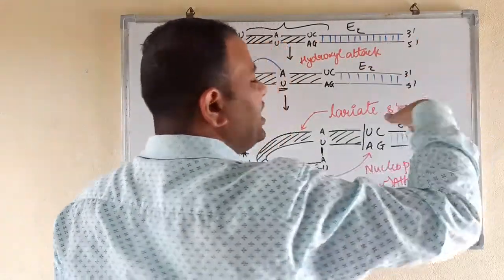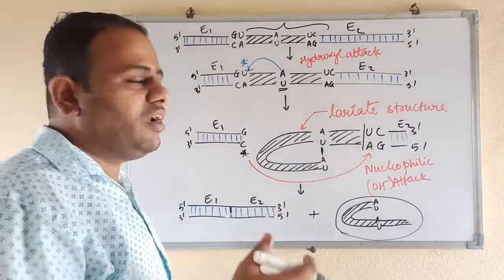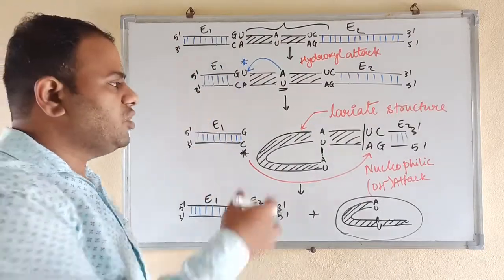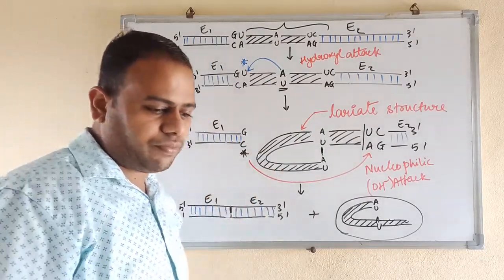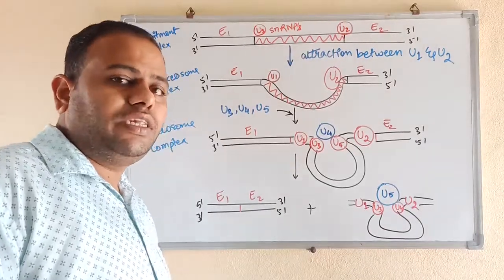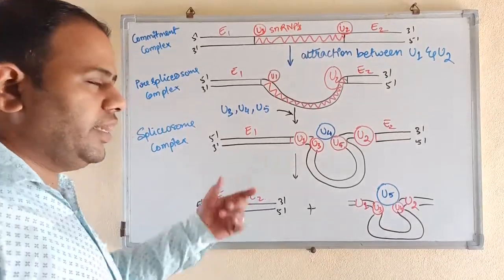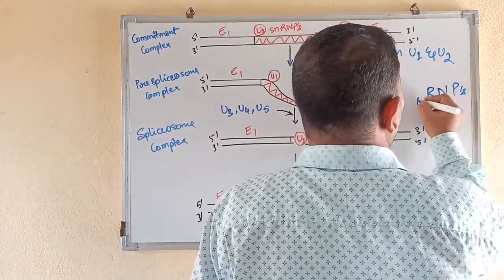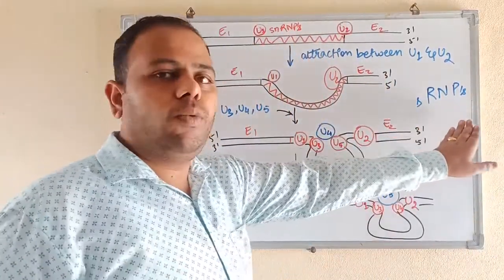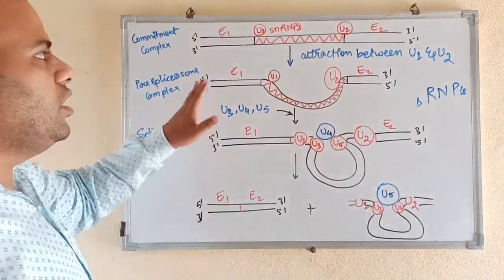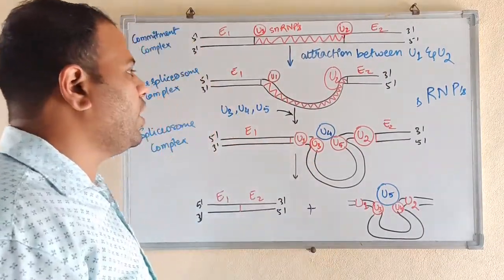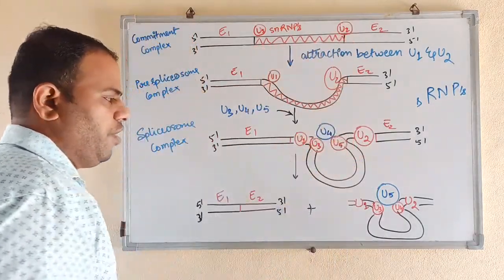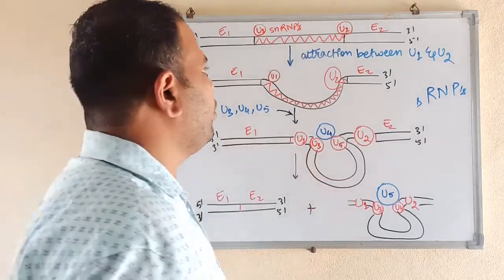Now let's see the different proteins involved in the splicing mechanism. These proteins are called snRNPs — small nuclear ribonucleoproteins. These proteins help in the splicing mechanism. There are different snRNPs: U1, U2, U3, U4, U5 — and they help in the removing of introns.